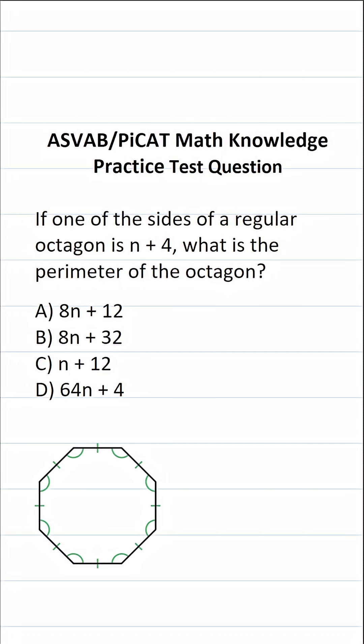This math knowledge practice test question for the ASVAB says: if one of the sides of a regular octagon is n plus 4, what is the perimeter of the octagon? You should recall from middle school geometry that a regular octagon is an 8-sided figure, and more specifically, it's an 8-sided figure where all the sides are equal.